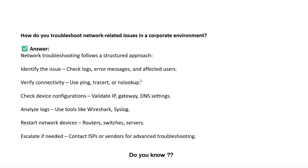How do we troubleshoot network-related issues in a corporate environment? First, we have to identify the issue — check error messages and logs. Then we check connectivity using ping, traceroute, and NSLookup. We check device configuration, analyze logs, restart network devices, and if we are not able to handle the issue, we escalate to the ISP.